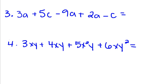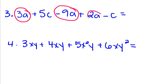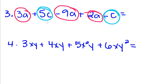Sometimes when you start combining like terms, you might want to circle them so you can see which ones you add together, especially when you have more than one term. So we have 3a, negative 9a, 2a, 5c, and negative c. We add them together: 3a minus 9a gives me negative 6a, plus 2a gives me negative 4a; plus 5c minus c gives me 4c.